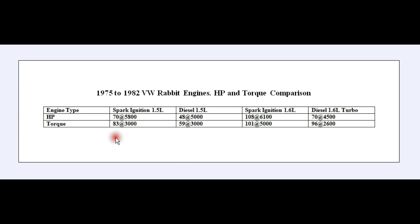From the archives, here are examples of non-turbocharged diesel engines versus spark ignition engines. Two Volkswagen Rabbit engines, both 1.5-liter with the same bore and stroke: the spark ignition engine makes 70 hp at 5800 rpm and 83 ft-lbs at 3000 rpm, while the diesel makes only 48 hp at 5000 rpm and 59 ft-lbs at 3000 rpm. For a 1.6-liter comparison with the same bore and stroke: the naturally aspirated spark ignition engine produces 108 hp at 6100 rpm and 101 ft-lbs at 5000 rpm, while the turbocharged diesel makes only 70 hp at 4500 rpm and 96 ft-lbs at 2600 rpm.